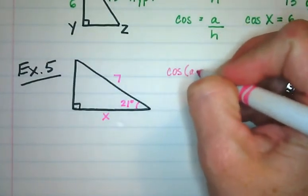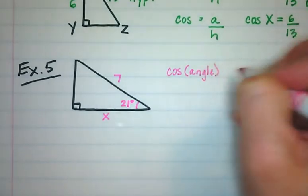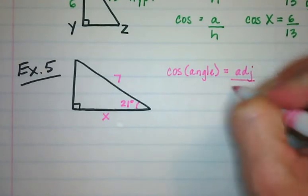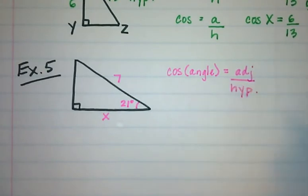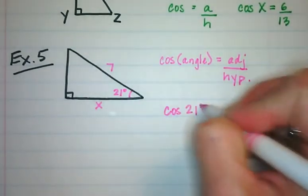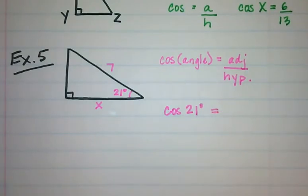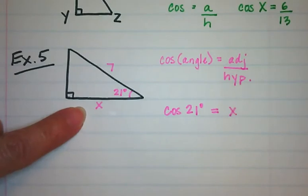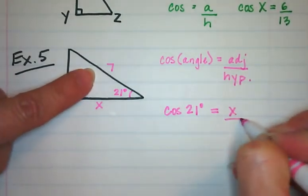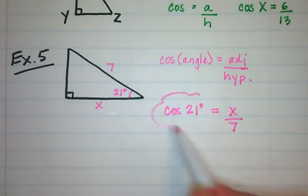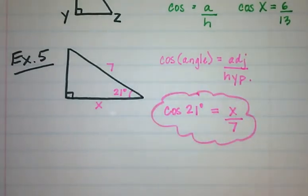The trig function that uses the hypotenuse and the adjacent side is cosine. So the cosine of the angle equals the adjacent over the hypotenuse. Filling in what we know: the angle is 21 degrees, the adjacent side is x, and the hypotenuse is 7. So cosine of 21 degrees equals x over 7. That trig function matches this triangle.